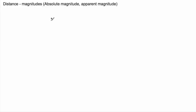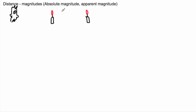This idea is that if you have some intrinsic property of a star — say two stars have the same luminosity — then the farther one is going to appear dimmer and the closer one is going to appear brighter. Think of two candles: if you're watching from Earth and both candles have the same luminosity, the one that's farther away will look dimmer.